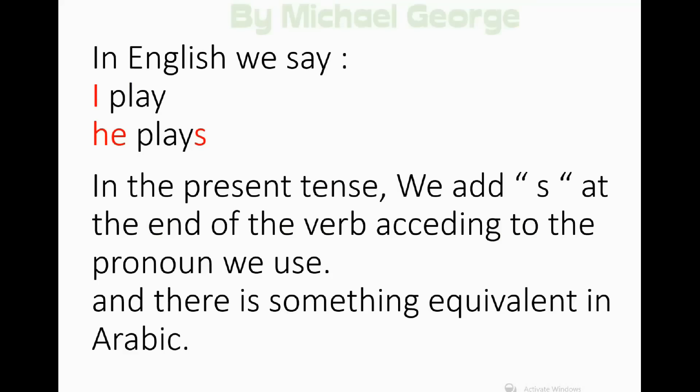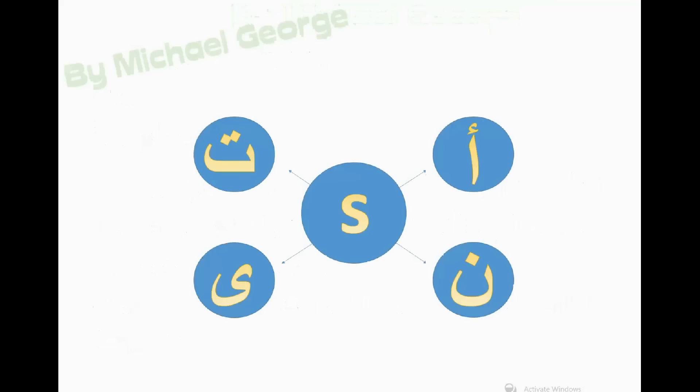In English we say 'I play', 'he plays'. In the present tense we add S at the end of the verb according to the pronoun we use. And there is something equivalent in Arabic. Instead of S, we have four characters or four letters.